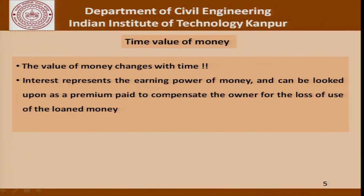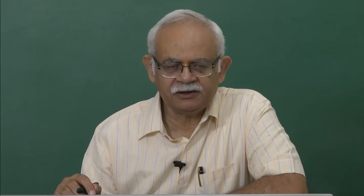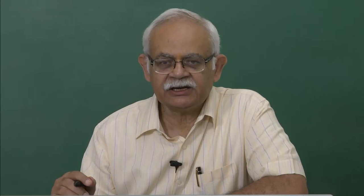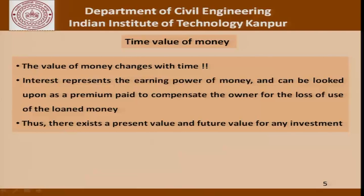Interest basically represents the earning power of money and can be looked upon as a premium paid to compensate the owner for the loss of use of loaned money. When I keep a hundred thousand rupees in the bank I get 3–4% interest because I forego the right to use that money. The bank gives this interest because it generates more money by lending to investors at 7–8% or 15%, and therefore there exists a present value and a future value for any investment.